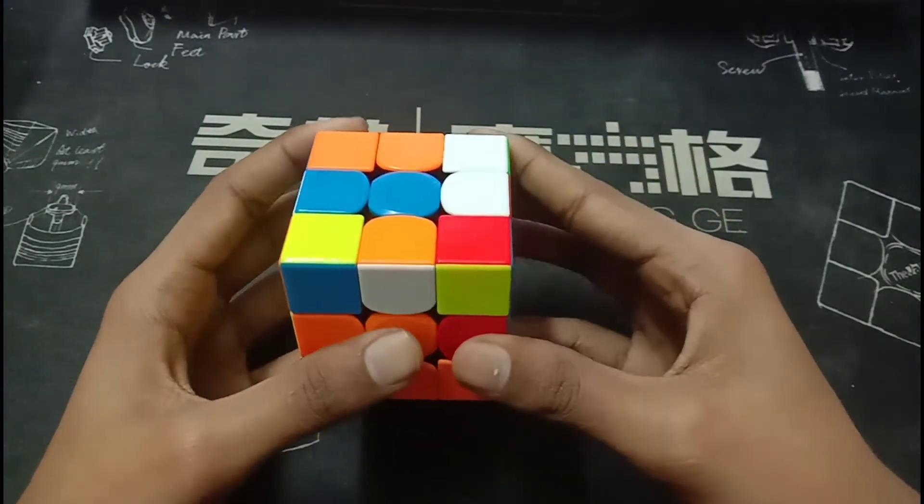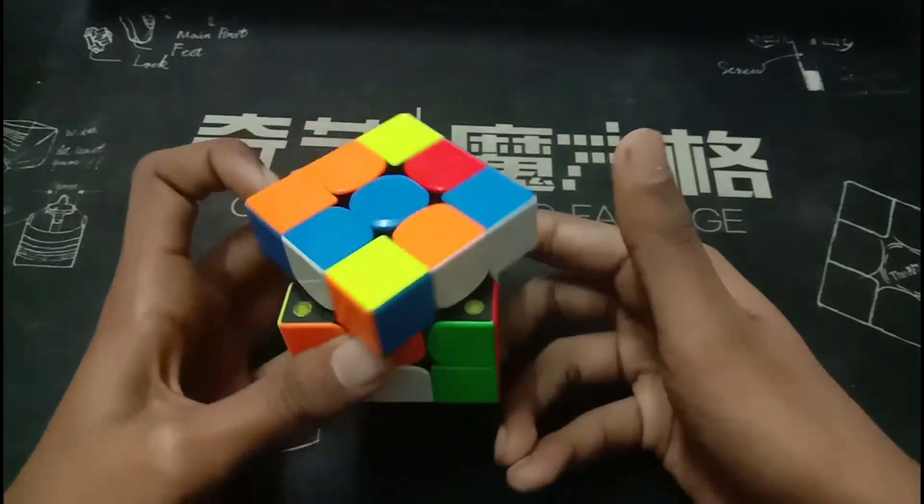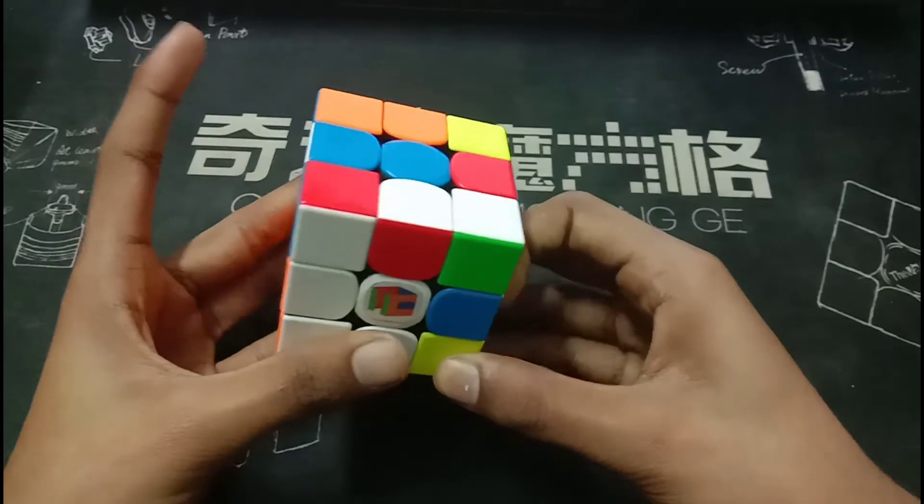For the third pair, he does something interesting. This is a keyhole, a very easy one. So I won't explain this.